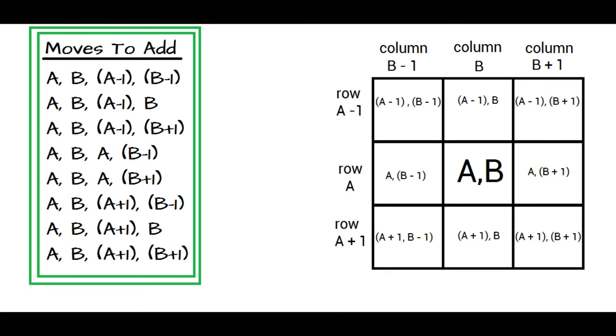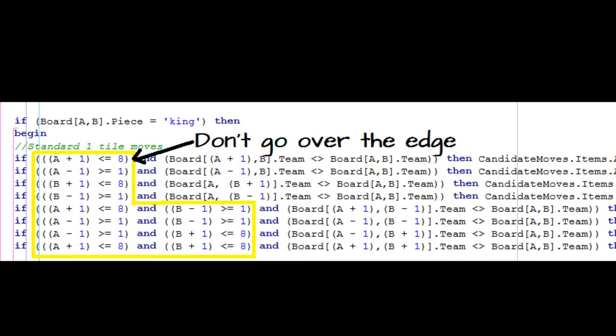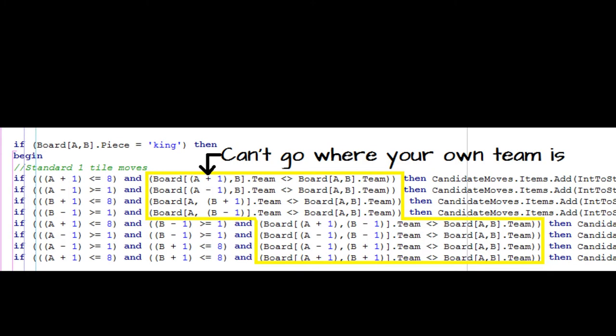If it is on the edge of the board, it isn't allowed to go beyond it. If either of the coordinates of a destination tile is 0 or 9, then that would be over the edge of the 1 to 8 board. So we shouldn't put moves like that on our list. This is what this part of the code is about. Also, although a king can move into empty squares, or by capturing into enemy squares, it can't go to a square that has one of its own team members on it. So we also need to check that the possible destination cells.team string isn't the same as current player.